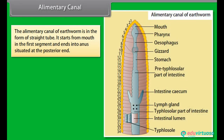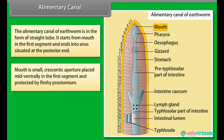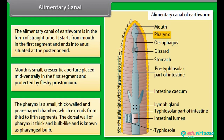The alimentary canal of earthworms is in the form of a straight tube. It starts from the mouth in the first segment and ends at the anus situated at the posterior end. The mouth is a small, crescentic aperture placed mid-ventrally in the first segment and protected by the fleshy prostomium. The pharynx is a small, thick-walled and pear-shaped chamber which extends from the third to fifth segment. The dorsal wall of the pharynx is thick and bulb-like, known as the pharyngeal bulb.